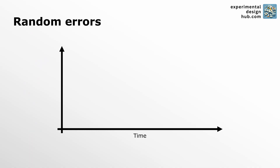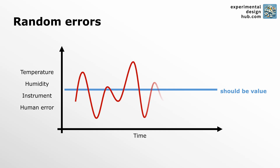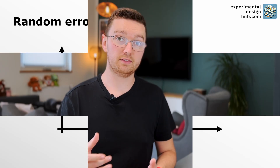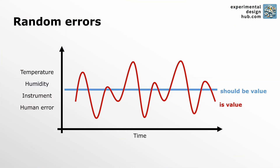Let's take a look at the difference between random errors and systematic errors first. Random errors arise from unpredictable or uncontrollable variations in your experimental process. These random errors can occur due to fluctuations in your measurement instruments, but also environmental changes like slight changes in the temperature or humidity that you experience while performing the experiments.